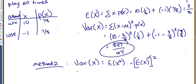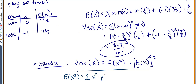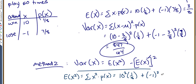To use Method 2, we first find the expected value of x². That's the sum of each x² value times its probability. In our case, this would be 10² times 1/8 plus negative 1² times 7/8, which gives 107/8.